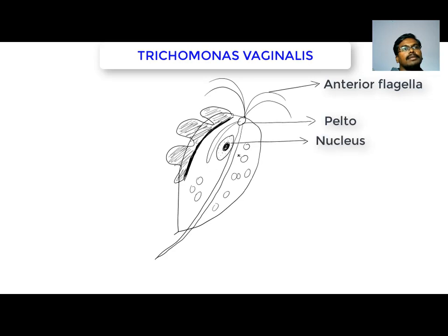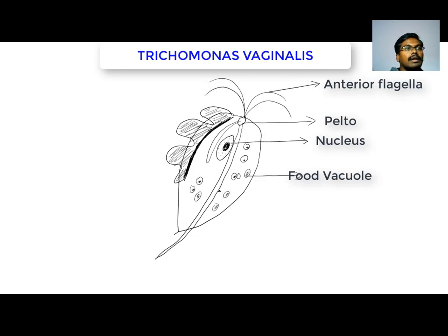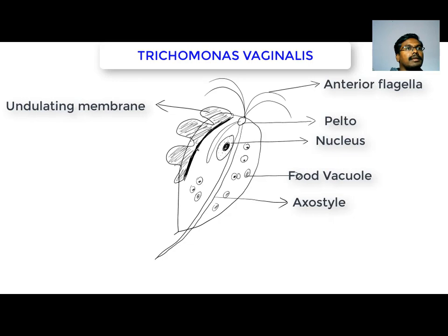The area where the flagella arise anteriorly is called the blepharoplast. There is a single nucleus. There are many food vacuoles, which may contain food particles or bacteria. This is the axostyle and this is the undulating membrane. This is the costa.